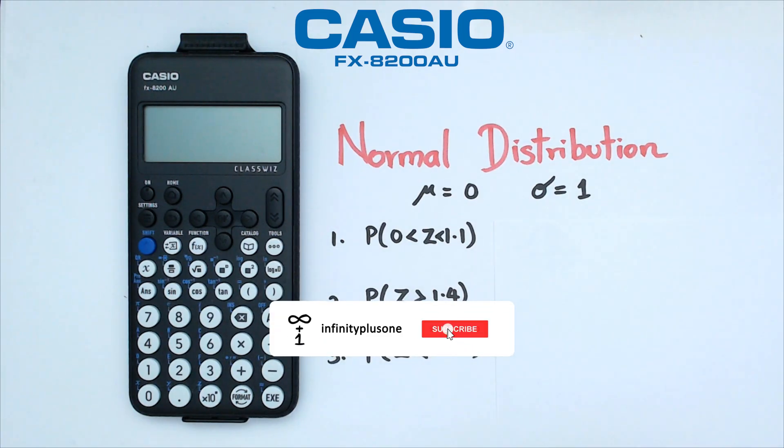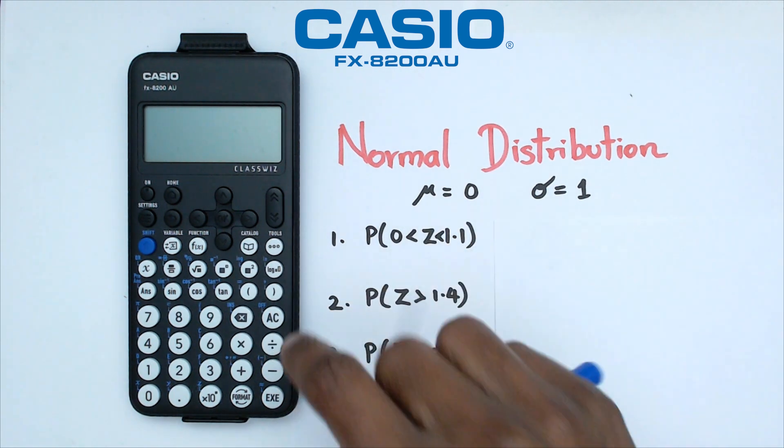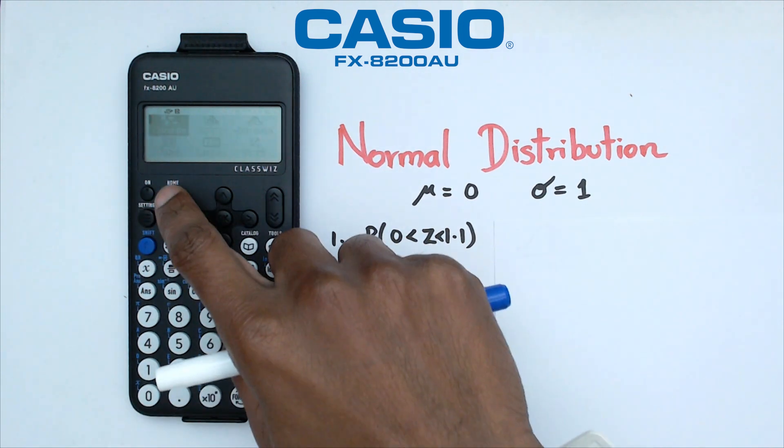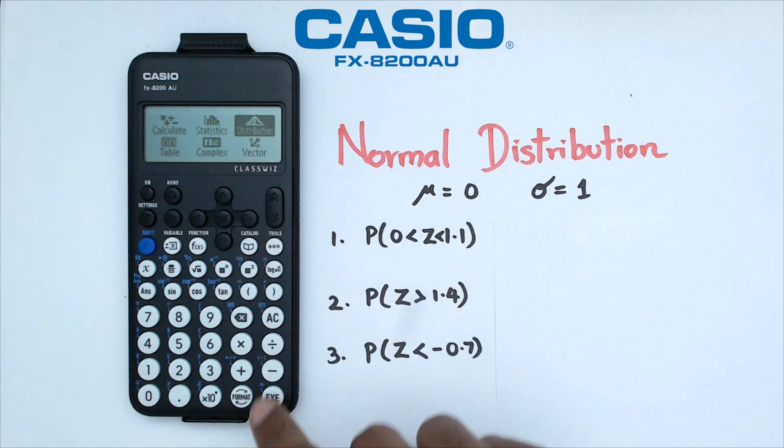Alright, so we're going to start off with the classic normal distribution where the mean is zero and the standard deviation is one. What we're going to do is switch on the calculator, go into the home menu, and go down to distribution, and click on EXE.